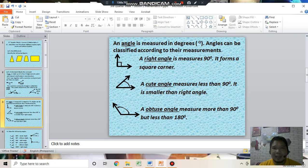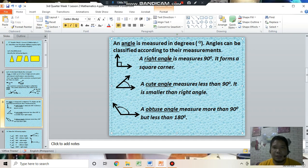An angle is measured in degrees. This is the symbol of degrees. Angles can be classified according to their measurement. First angle is called right angle. It measures 90 degrees. It forms a square corner. This is the illustration of right angle.